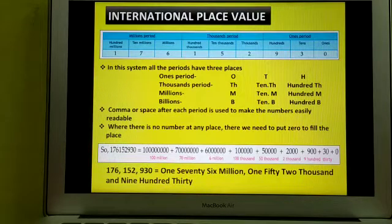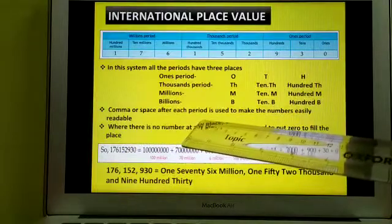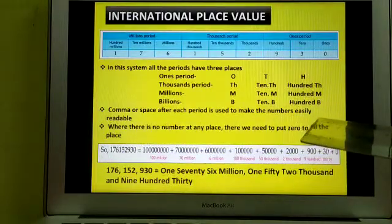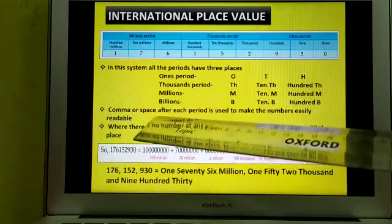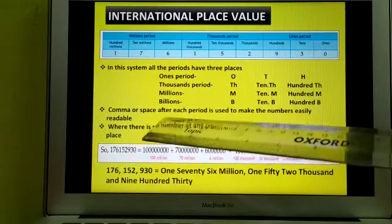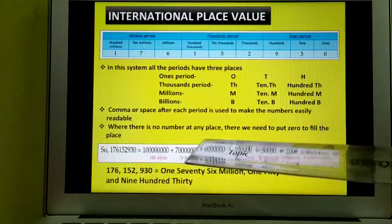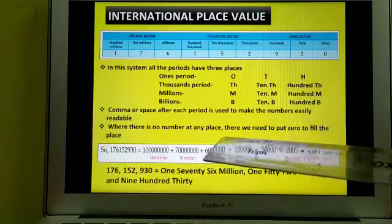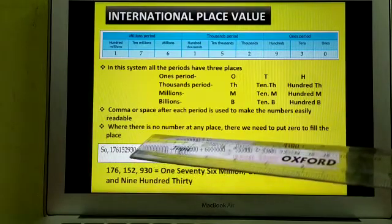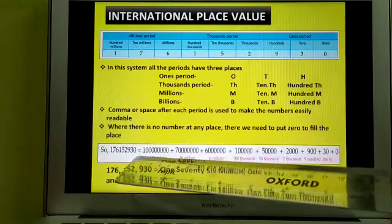A comma or space after each period is used to make numbers easily readable. In the international place value system also, when you write the numbers you have to put commas. Where there is no number at any place, you need to put zero to fill the place.